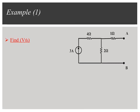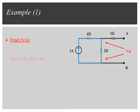Because the current will not flow in the 1 Ohm resistor as it is open, the total current flows in both the 4 Ohm and 2 Ohm resistors as this is a series circuit. Therefore, the voltage between the terminals is equal to the voltage across the 2 Ohm resistor. According to Ohm's law, V-Thevenin is equal to 6 Volts.